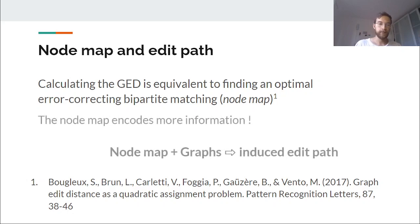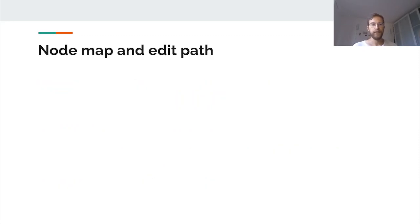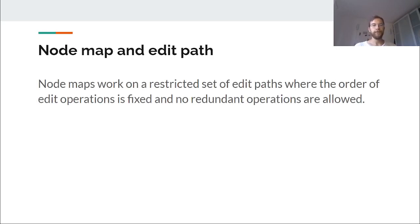Moreover, and something that is very important for us, the node maps provide an induced edit path. So if you have the node map and the graphs you are matching, you can create an edit path. As a little word on node maps, they work on a subset of edit paths. If your cost function respects the triangle inequality, this restricted set of edit paths will still contain an optimal solution. So that's why if you find the optimal node map, you find the optimal edit path.